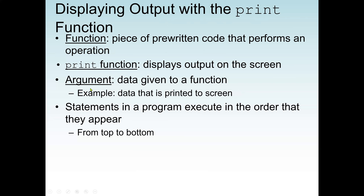Every function has an argument — the data given to the function that it will use to perform its task. For example, if we write a function to find the sum of two numbers, the arguments are the two values. Statements in a program are executed in the order they appear, from top to bottom, unless we have a decision or a loop.